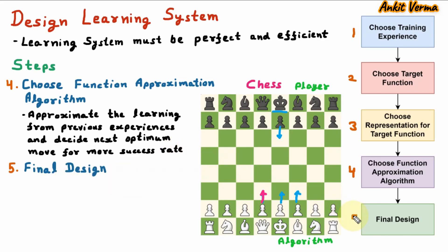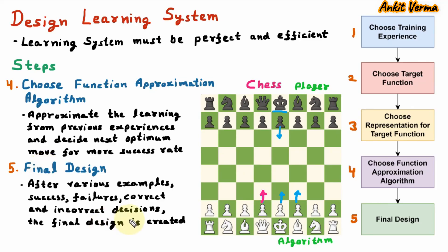Now, the fifth step for designing a learning system is final design. After various examples, success, failures, correct and incorrect decisions, the final design is created.